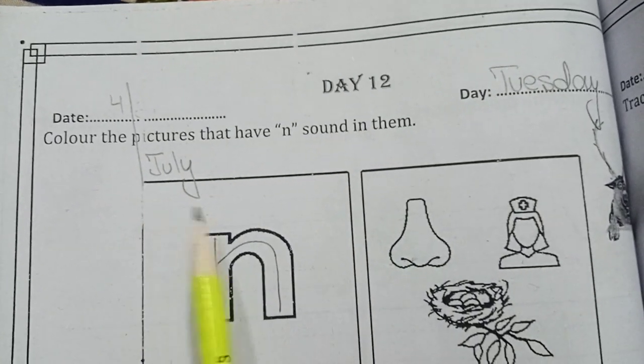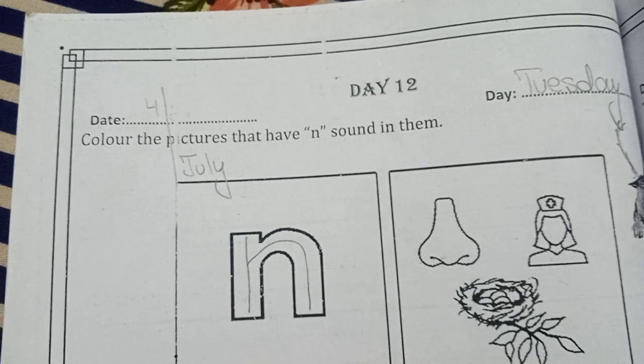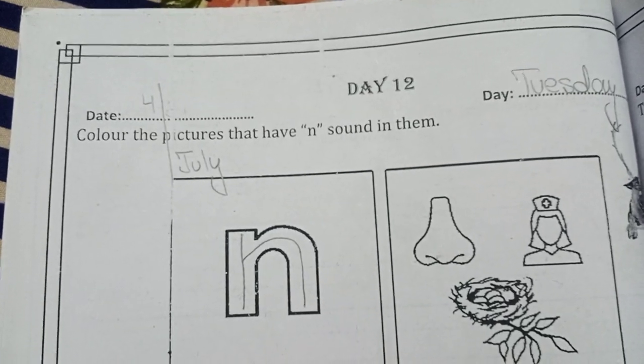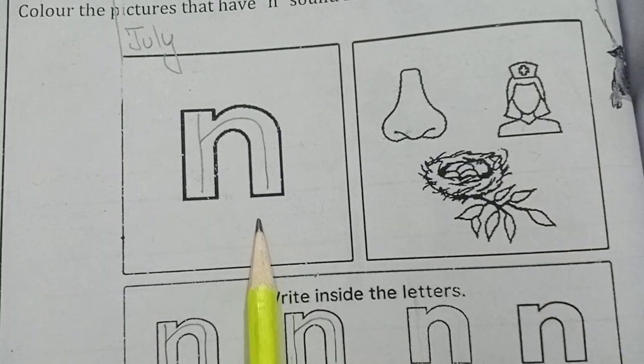Date: 4th July, Tuesday. Color the pictures that have 'N' sound in them. Okay, which letter is this?